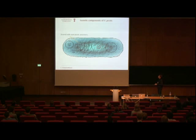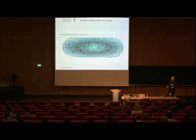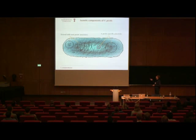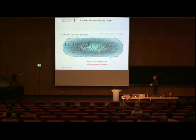Yersinia pestis is a gram-negative bacterium with four genetic components: a large chromosome of about 4.6 million base pairs, and three different plasmids. One plasmid is shared with other Yersinia bacteria such as Yersinia enterolytica. Two plasmids are unique to Yersinia pestis — acquired at some point during evolution — and they allow the bacteria to enter the human host; without them, the bacteria could not infect humans. One of those plasmids, the PCP, is a very high copy number plasmid, with about 100 copies per cell, similar to mitochondria in a human cell.